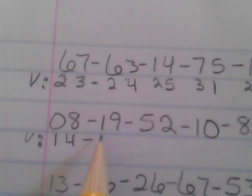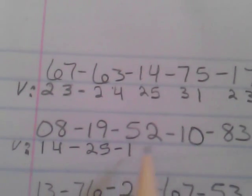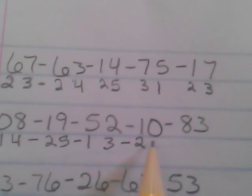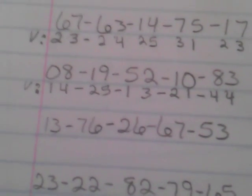So number 8 is going to be, the 0 converts into a 1, the 8 converts into a 4. 19, the 1 converts into a 2, the 9 into a 5. 52, the 5 converts into a 1, the 2 converts into a 3. 10, the 1 converts into a 2, the 0 into a 1. 83, the 8 converts into a 4, the 3 converts into a 4, and there you have it.